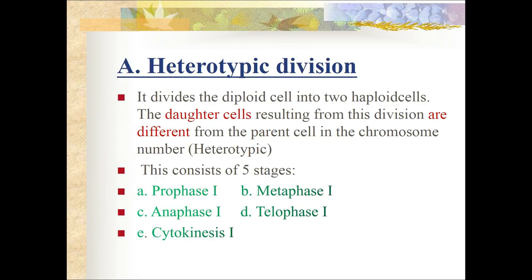In the heterotypic division, a diploid cell divides into two haploid cells. The daughter cells are different from the parent cell in chromosome number - the parent has 2N chromosomes whereas daughter cells have N chromosomes. That's why it is named heterotypic division. This consists of five stages: prophase I, metaphase I, anaphase I, telophase I, and cytokinesis I.